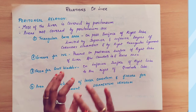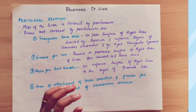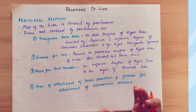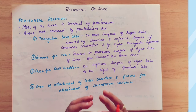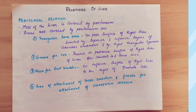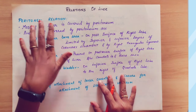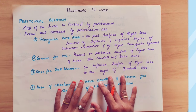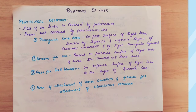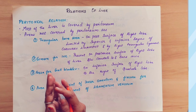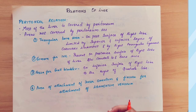Visceral means organs. If the liver is viewed on the surface, there are organs present. The peritoneum covers the liver — peritoneum is the serous covering of the abdominal cavity. First, we will talk about peritoneal relation. The liver is covered by peritoneum in almost all parts, but it will be uncovered in four regions.